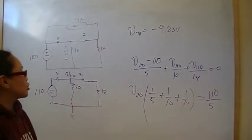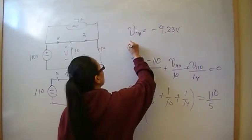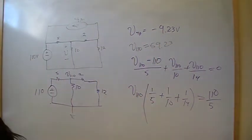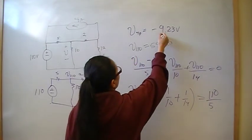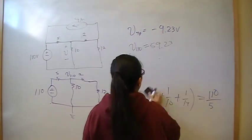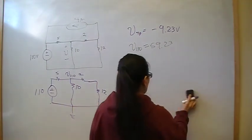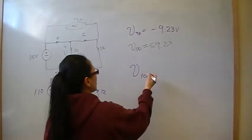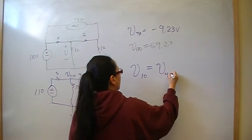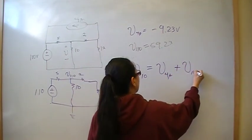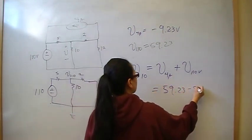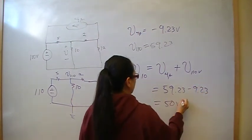So 59.23 is what's contributed by the 110 volt source. So V110 is 59.23. So 59.23 minus 9.23 is going to be 50. So now we can say that V10, the voltage drop across the 10 ohm resistor, is going to be the effect of the 4 amp plus the effect of the 110 volt voltage source, and that's going to be 59.23 minus 9.23, which is 50 volts. And that's the answer for part A.